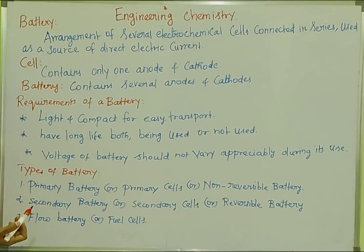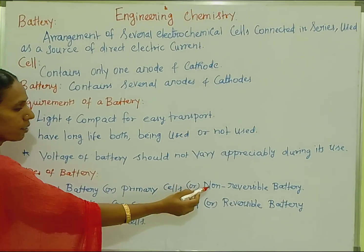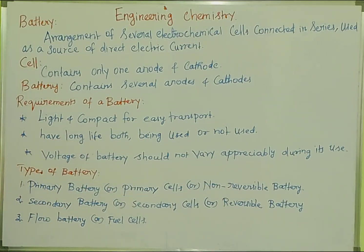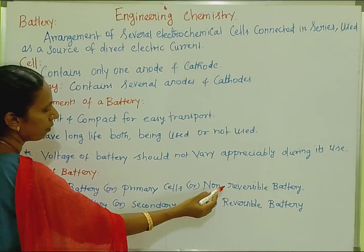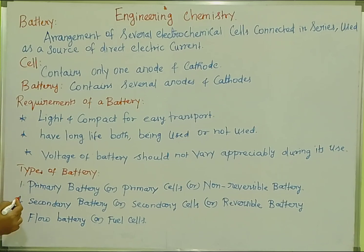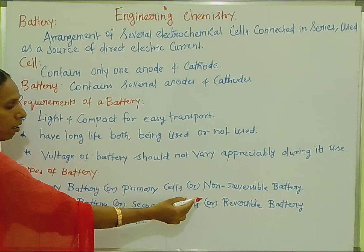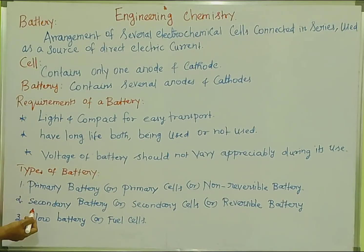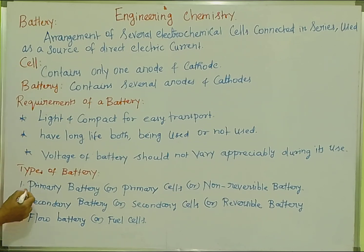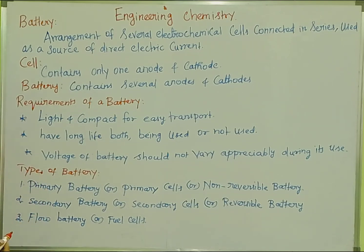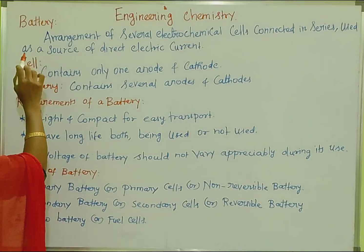Types of battery: one is primary battery or non-reversible battery, two is secondary battery or reversible battery, and there are also flow batteries and fuel cells. So there are three types, and in this video we will see batteries and fuel cells.